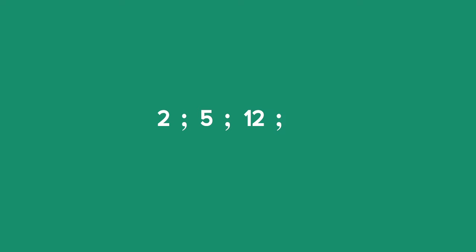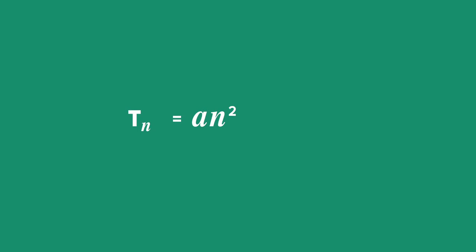Let's have a look at an example. We are asked to write down the general term for the sequence 2, 5, 12, 23. We know that the general form of a quadratic sequence is Tn = an² + bn + c.